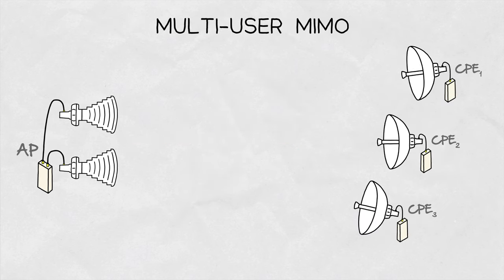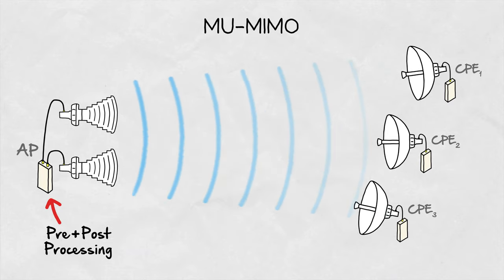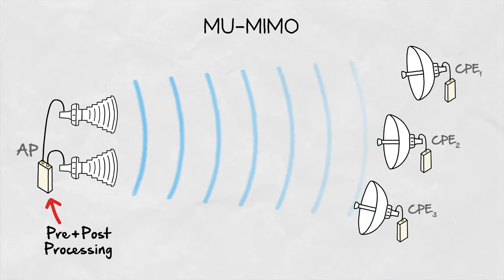In a MU-MIMO system, the pre- and post-processing only happens on the side of the access point, which communicates with multiple independent CPEs at the same time.